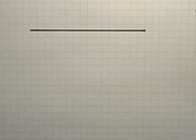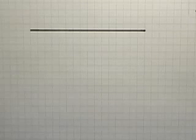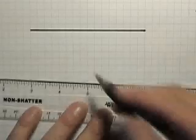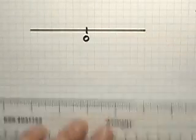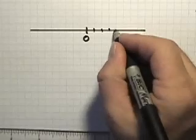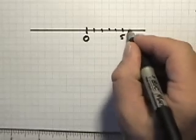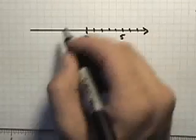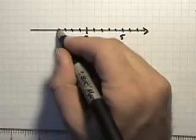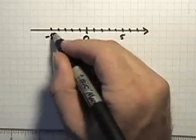One of the most classic ways to represent the integers is using the number line. Starting with 0 in the center, as we move to the right, we are moving in the positive direction. As we move to the left, we are moving in the negative direction.